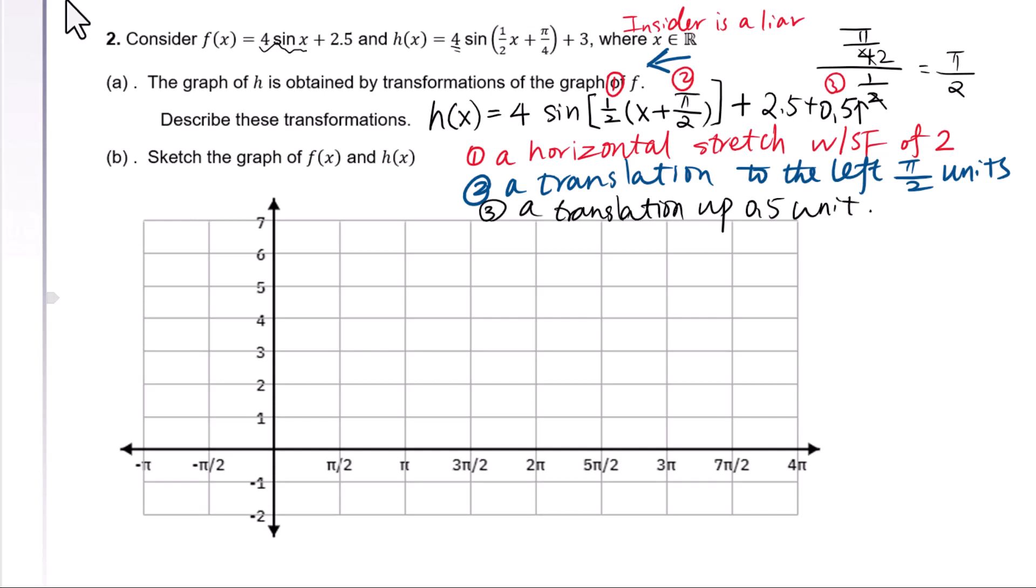Part B: Sketch the graph of f(x) and h(x). f(x) = 4sin(x) + 2.5. The new origin is (0, 2.5). Period is 2π. Amplitude equals 4.